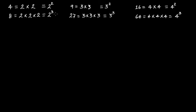Similarly, nine can be written as three times three, equal to three squared, and 27 can be written as three times three times three, equal to three cubed. So nine is a perfect square and 27 is a perfect cube. This is 16 — four times four, four squared — so 16 is a perfect square, whereas 64 can be written as four times four times four, that is four cubed, so 64 is a perfect cube.